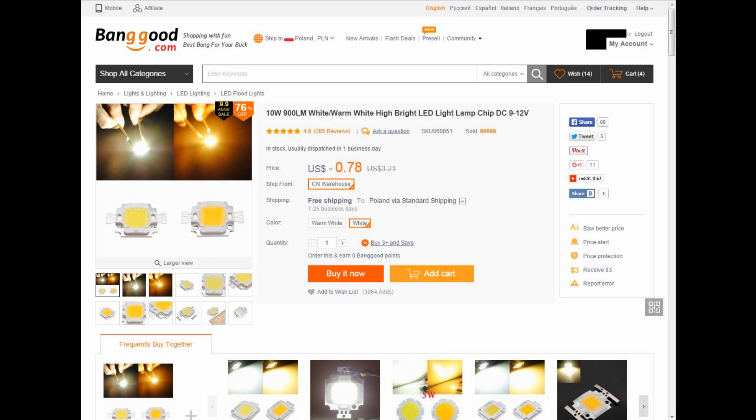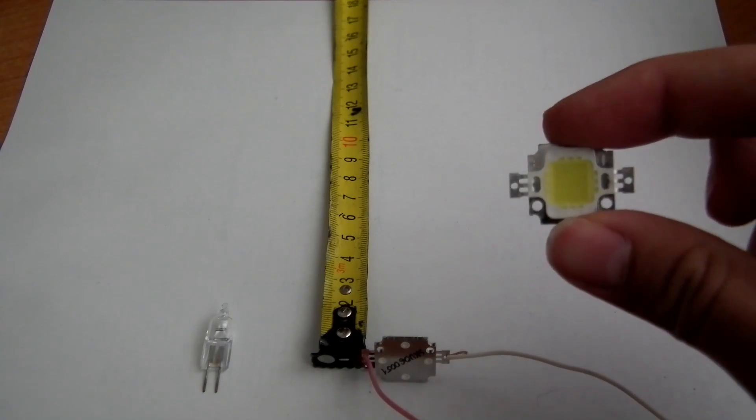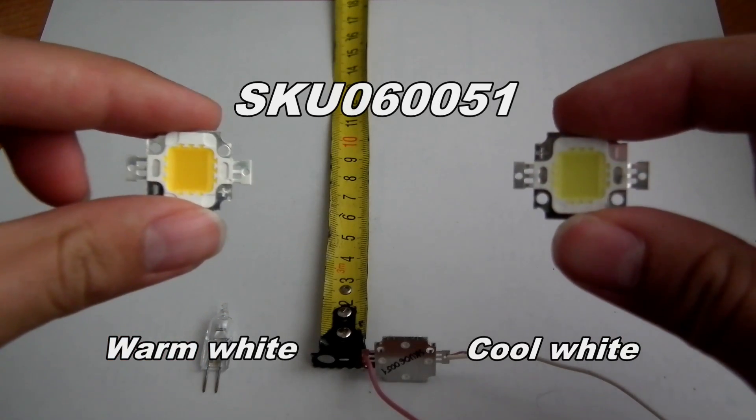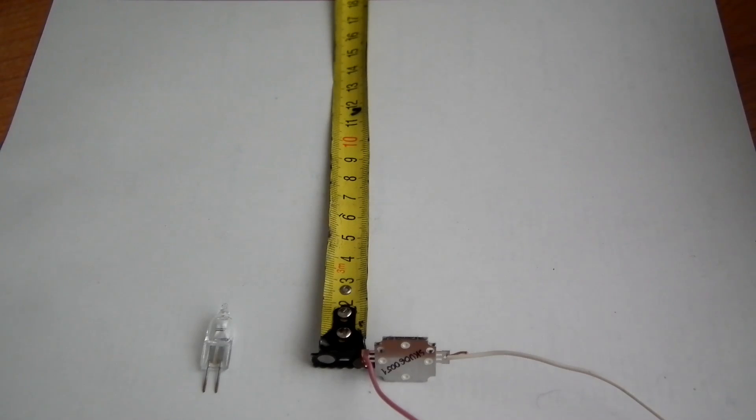A few weeks ago on August 4th, I ordered very cheap diodes from banggood.com, SKU 060051 in warm and cool white versions. They were described to have very good parameters for the price. I didn't believe they would be good, but I decided to give them a try.